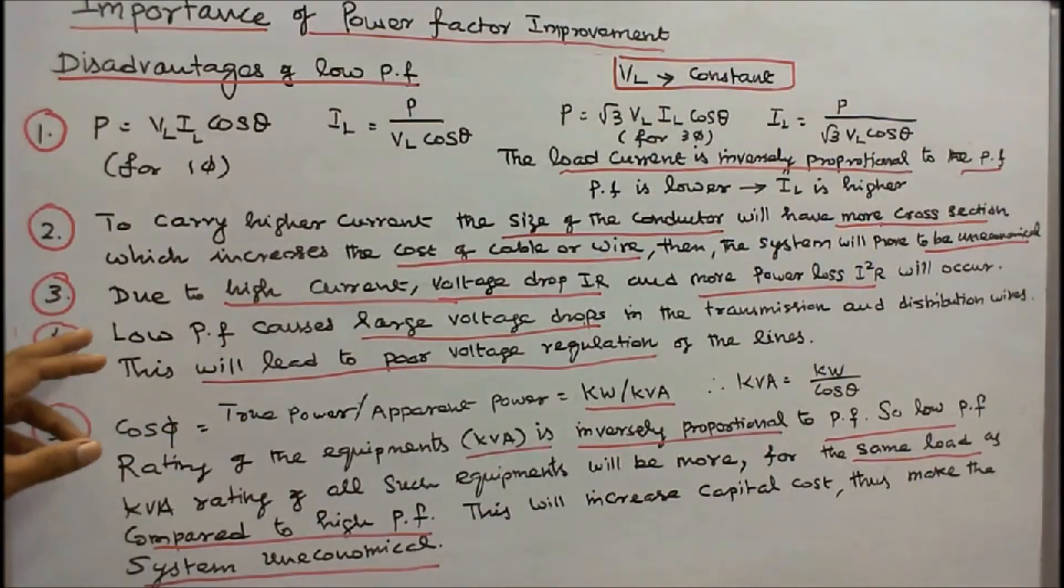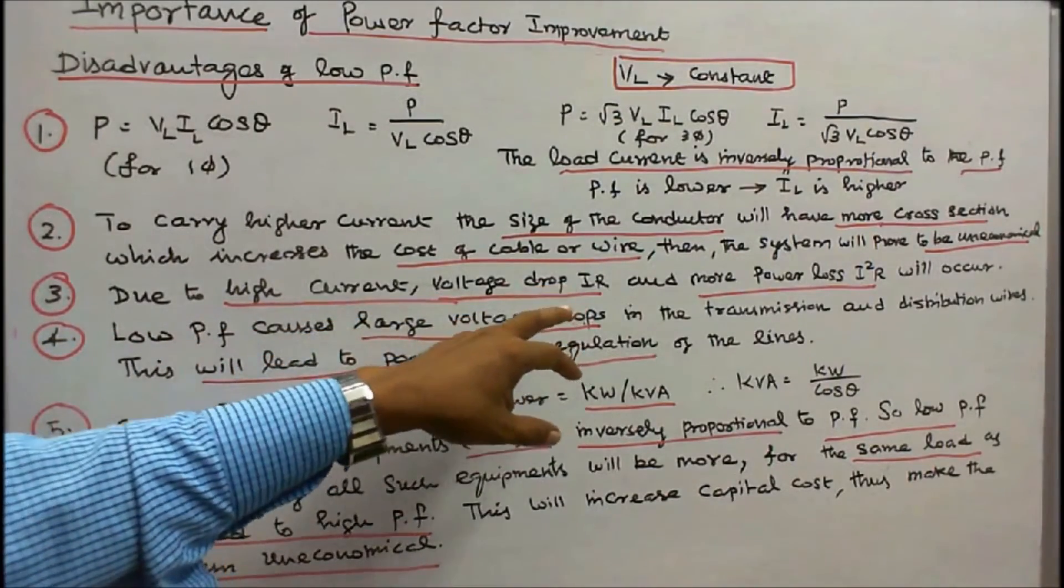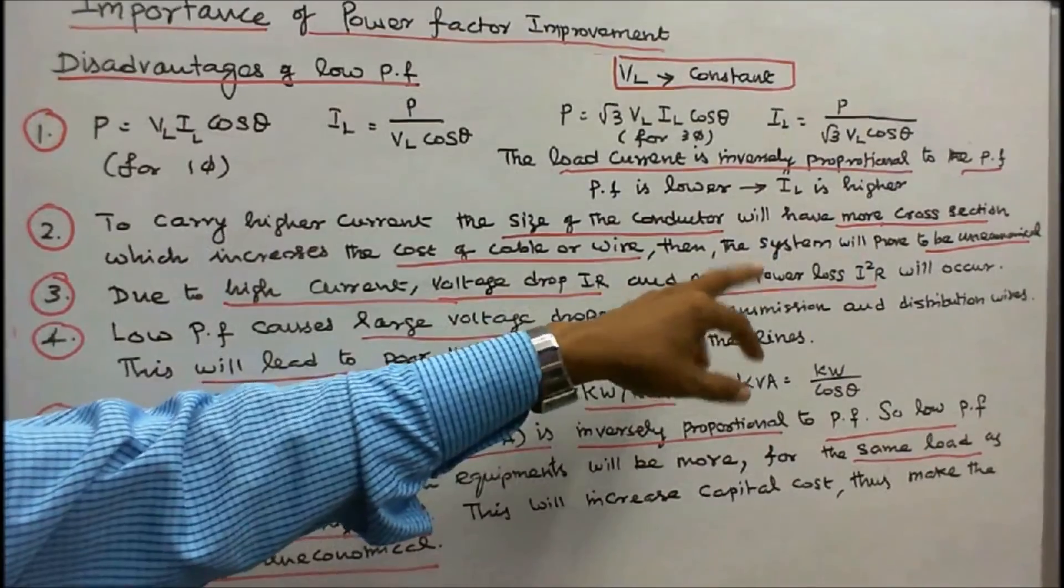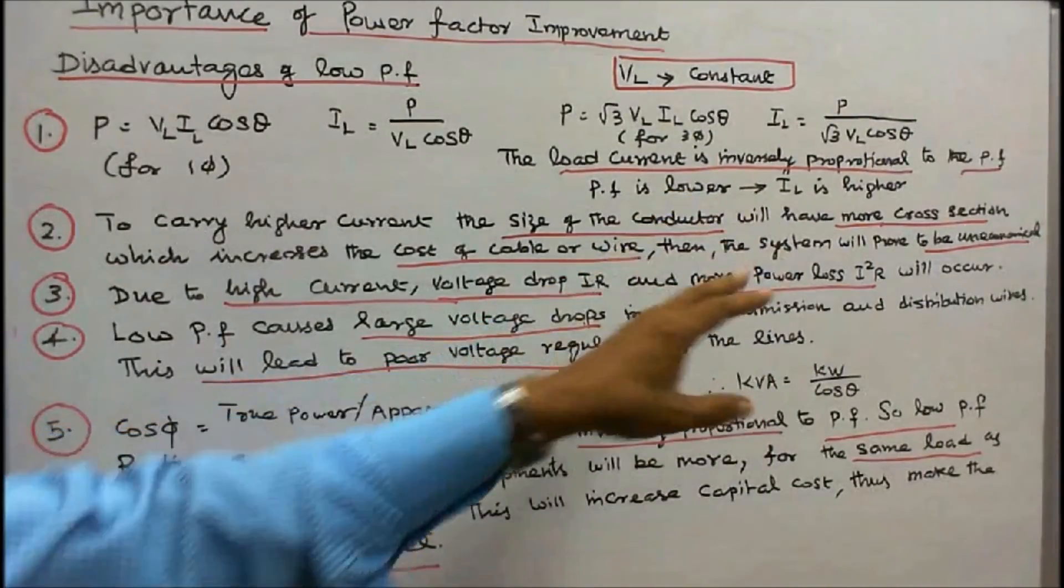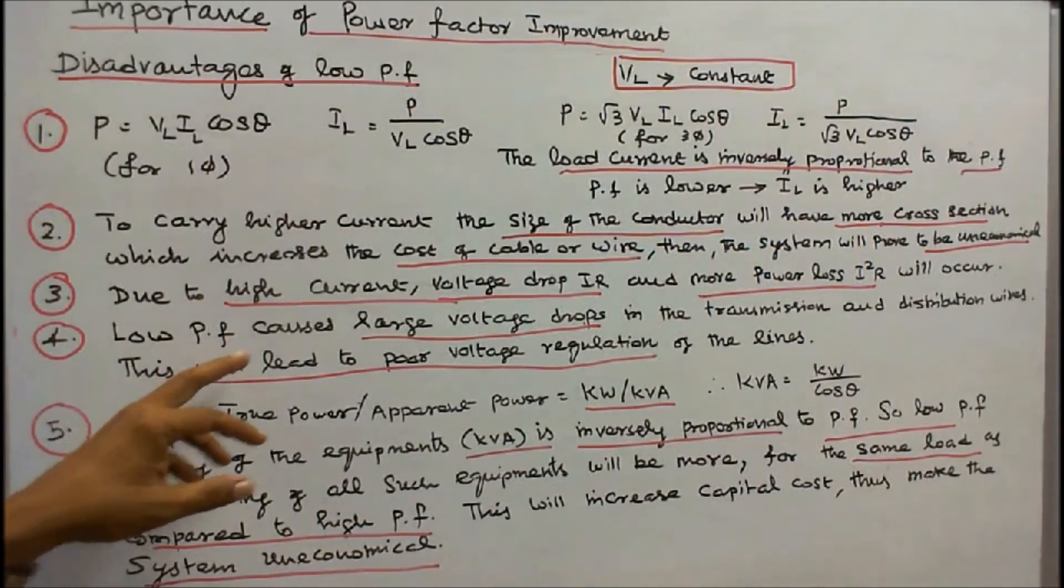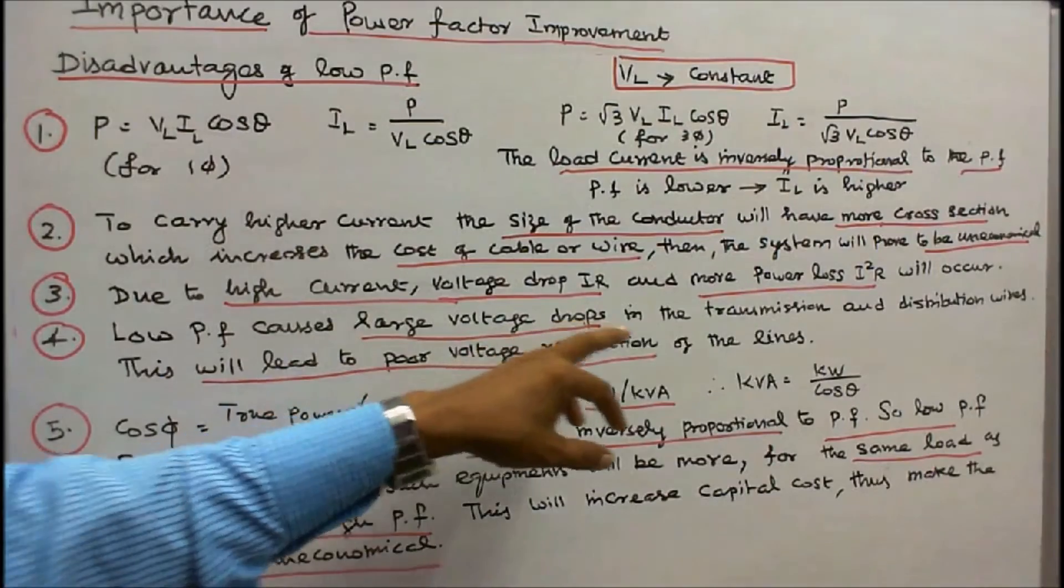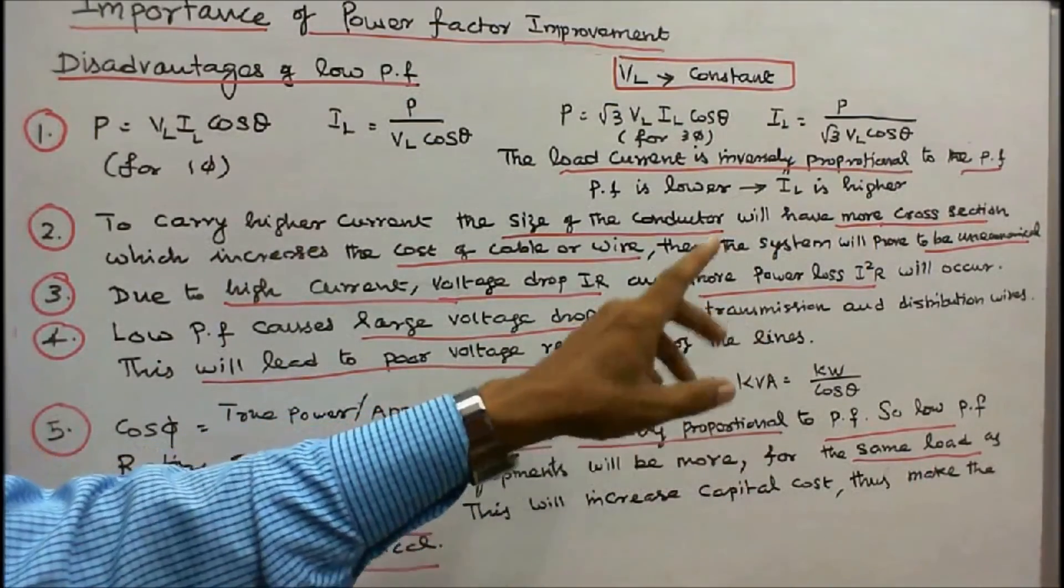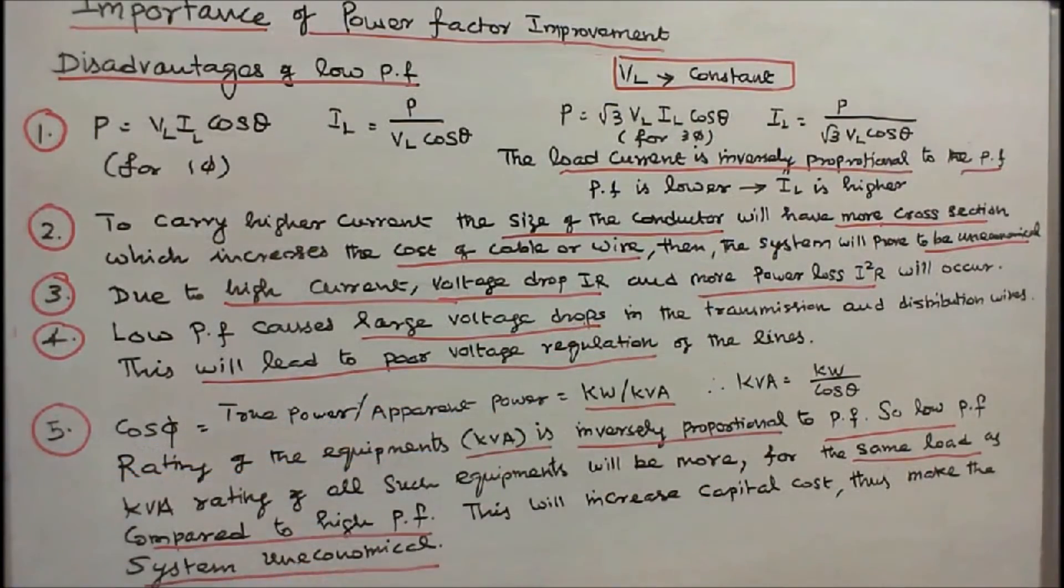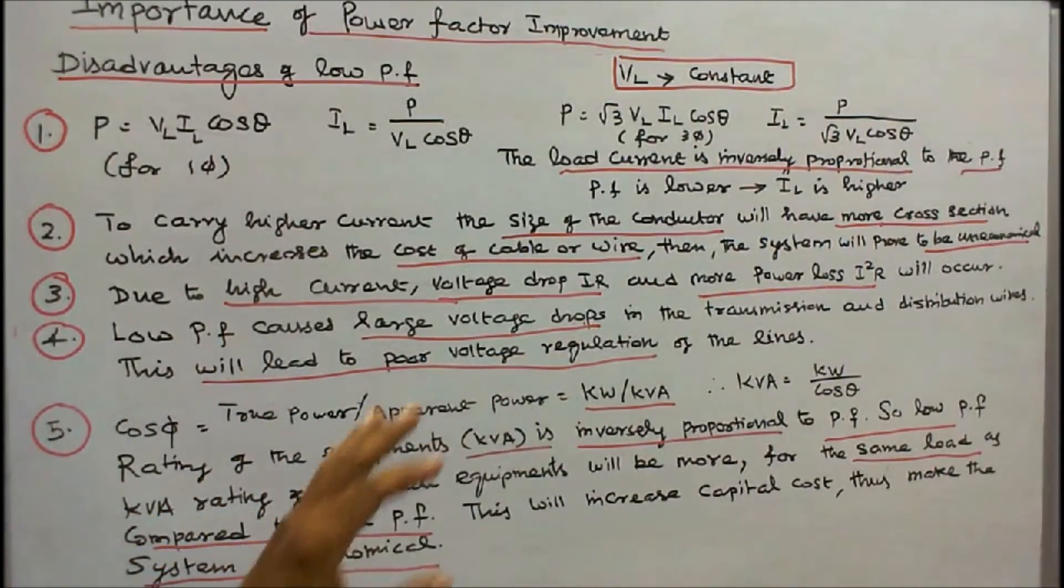Number 3: Due to high current, voltage drop IR and more power loss I²R will occur. Number 4: Low power factor causes large voltage drop in the transmission and distribution wires or lines. This will lead to poor voltage regulation of the lines.